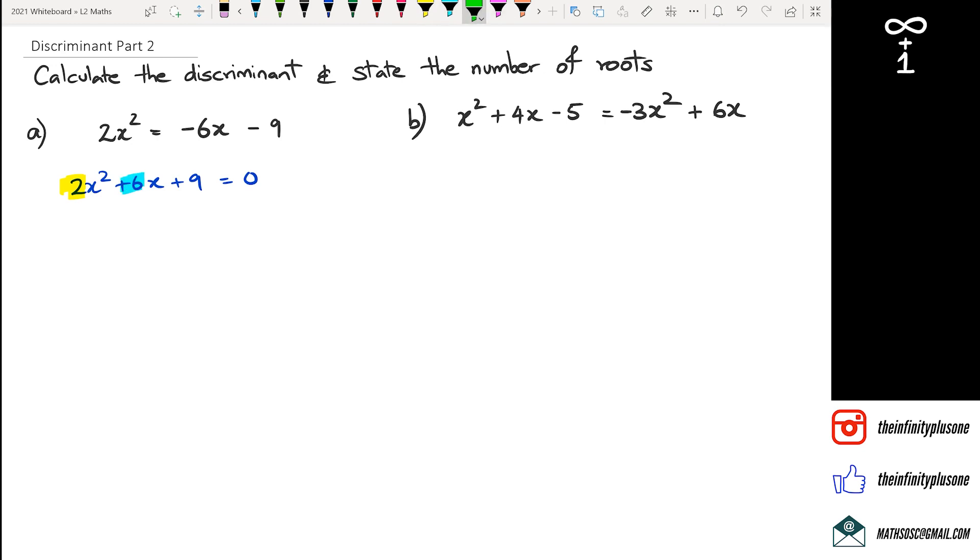Now remember that your general equation of a quadratic function is ax² + bx + c = 0. So this is how I know what my a, b, c values are.